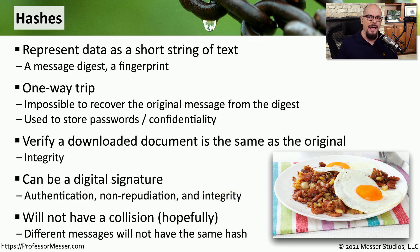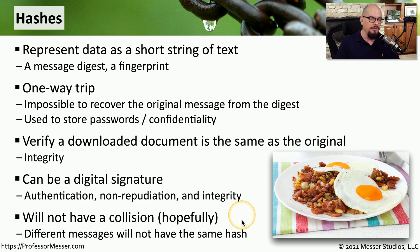One unique aspect of a hash is that there is always a unique hash for a particular kind of input. You will never have two different kinds of input create the same hashing value. If you do find that two different inputs are creating the same hash output, then you've found a collision, and this is something you would not want to have with a hashing algorithm.